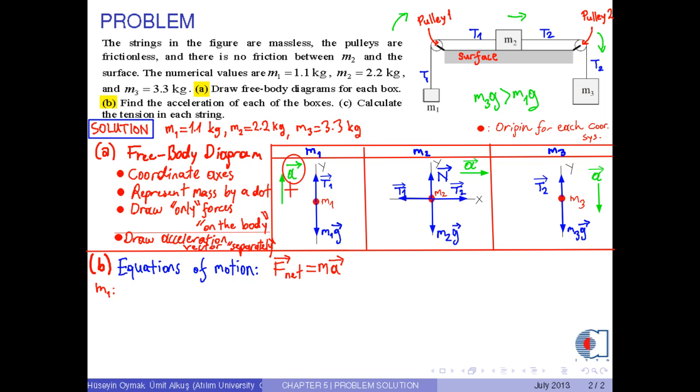Therefore, the net force on the y-axis for mass M1 becomes T1 minus M1 G, which is equal to M1 times A. As you notice, there is no motion along the x-axis for mass M1.